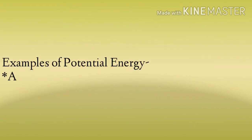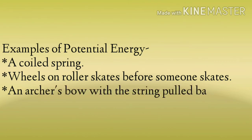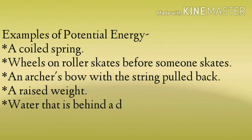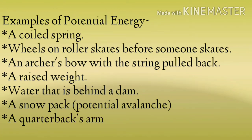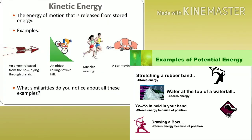Examples of potential energy: a coiled spring; wheels on roller skates before someone skates; an archer's bow with the string pulled back — जब हम bow को पीछे की तरफ खींचते हैं, तब वहाँ पर भी potential energy काम होती है. Potential energy को आप समझ सकते हो stored energy — जो पहले से energy store करती है. A raised weight; water that is behind a dam; a snow pack; a quarterback's arm before throwing a pass — जब हम कोई भी object फेंकने से पहले हाथ को पीछे की तरफ करते हैं, तो वहाँ पर भी potential energy काम करती है. जब हम किसी रबड को stretch करते हैं, तो उसकी stretching में potential energy काम करेगी.